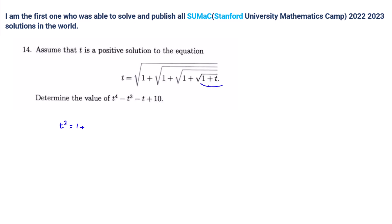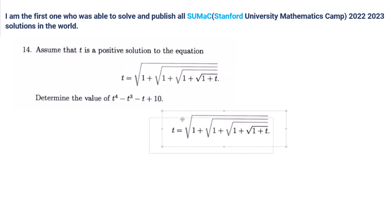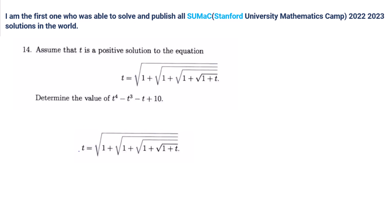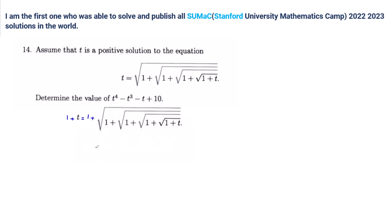Also here we have t plus 1. We can say, also let's do something. Consider this one as a copy. From here we can say — do you agree we can say t plus 1 is equal to, or 1 plus t is equal to 1 plus this? Yeah. So instead of 1 plus t, for example, we can write a. Also a.